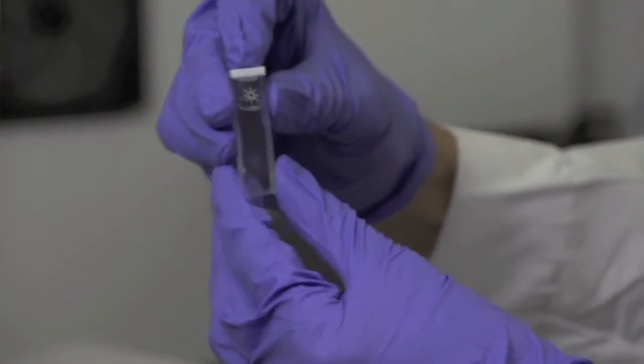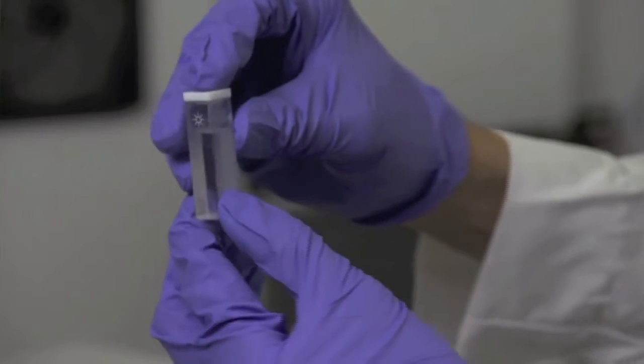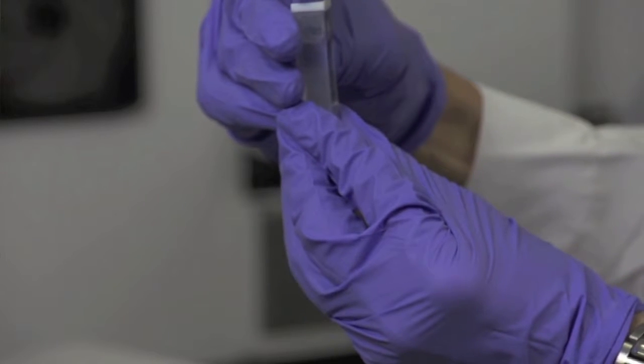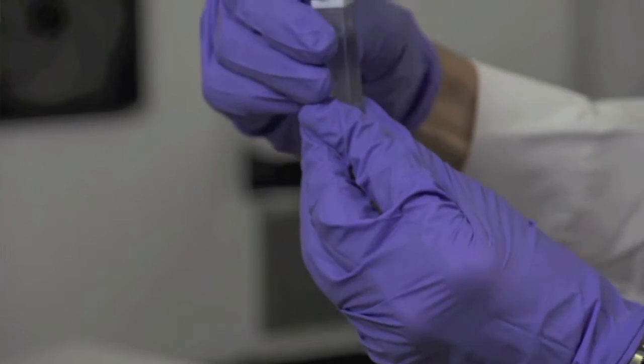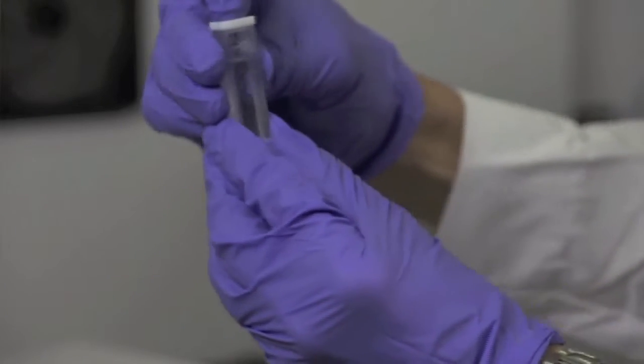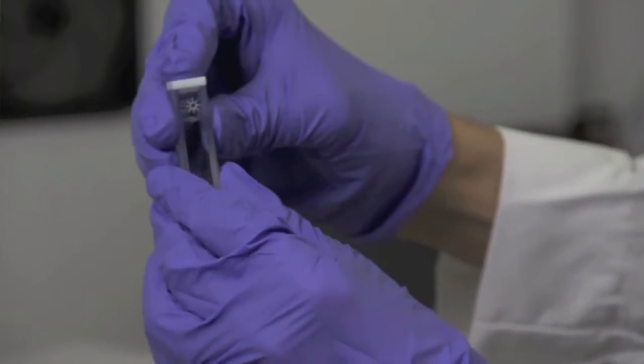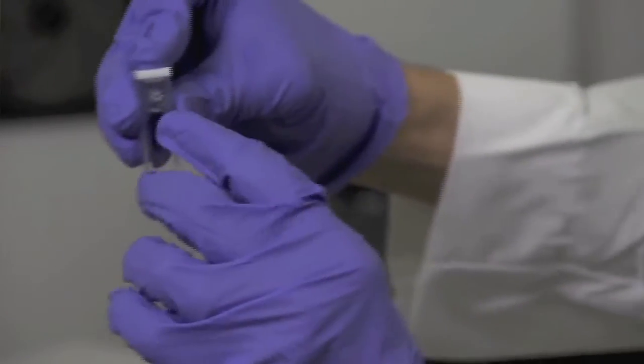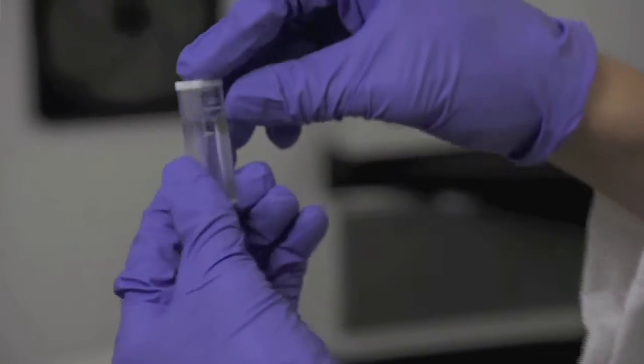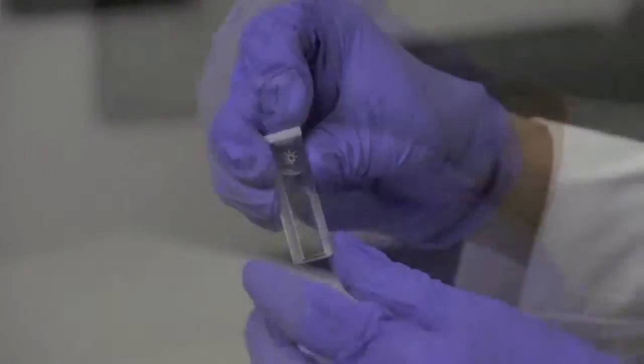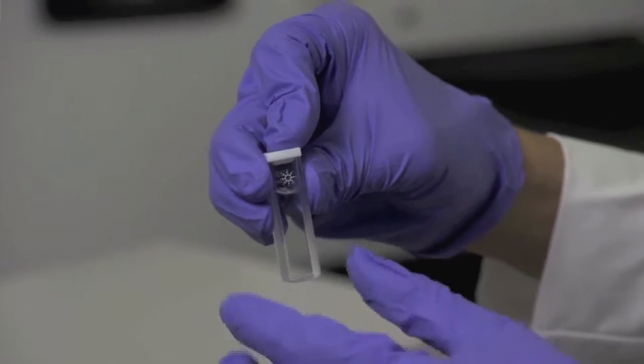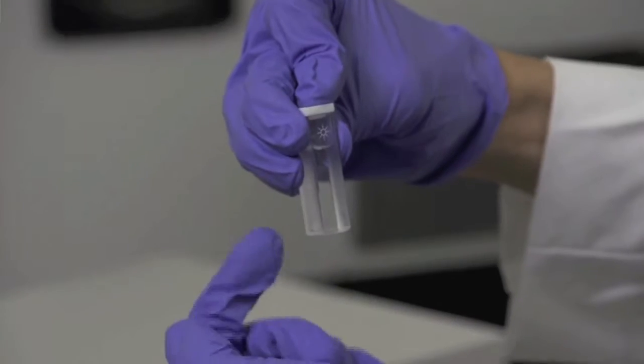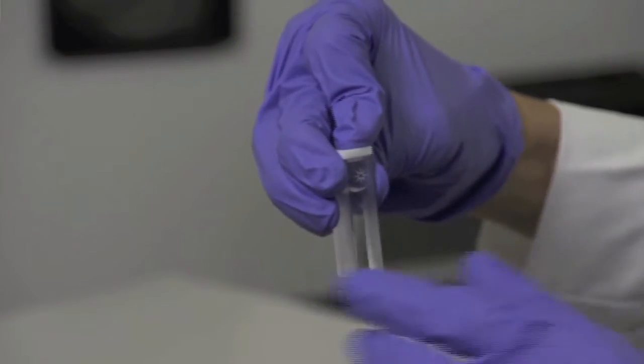Notice with the quartz cuvette that two of the sides are frosted, and these you will not want to place in the path of the beam, otherwise your spectral quality will not be good. Also notice that it will be unnecessary to mark the top of this cuvette because there are two different indicators on each side. The side of the cuvette with the little sun image will face towards the front of the bench, such that the beam can go through that portion of the cuvette first.